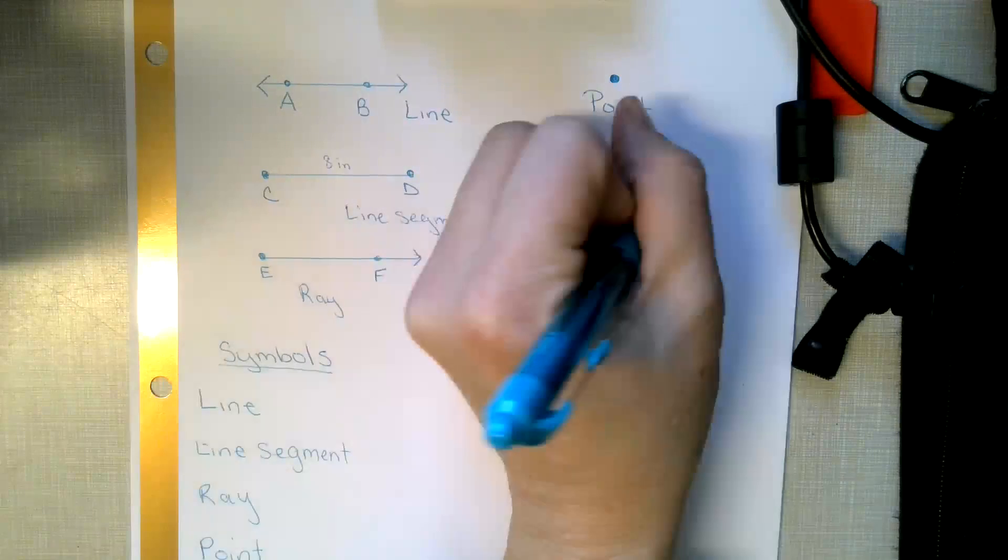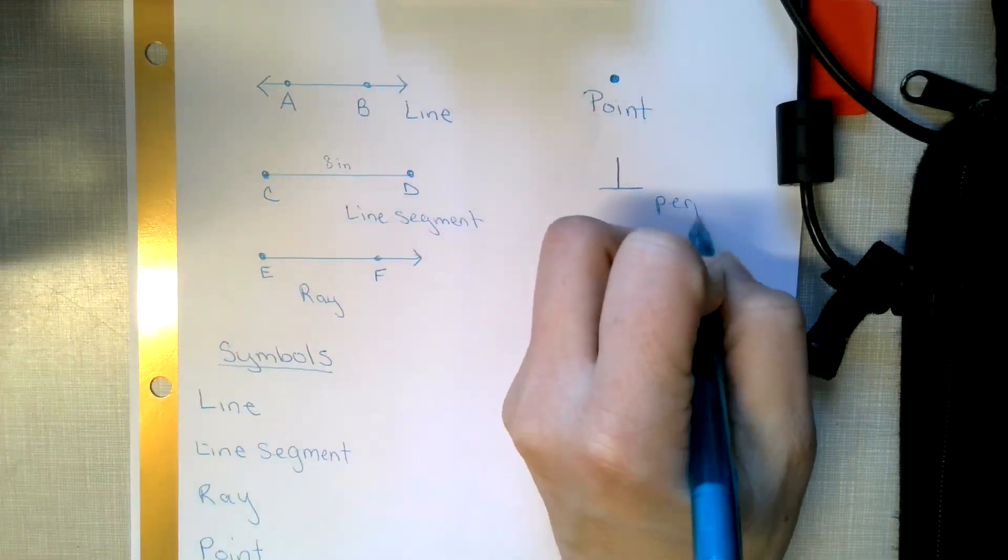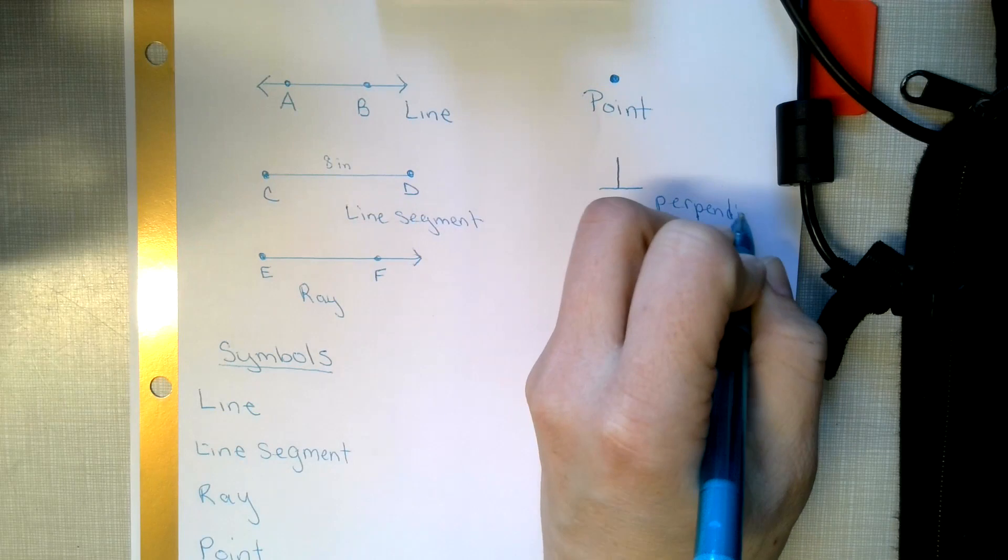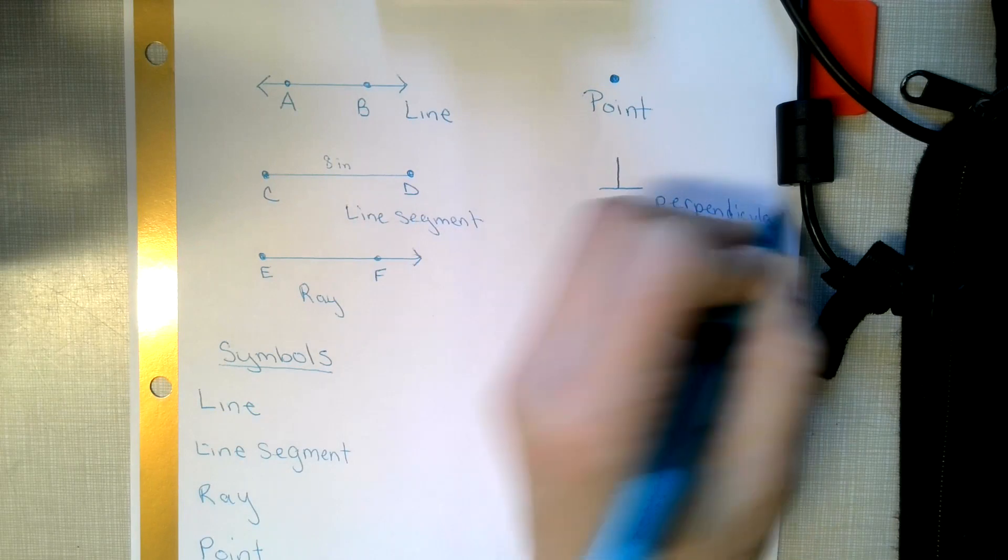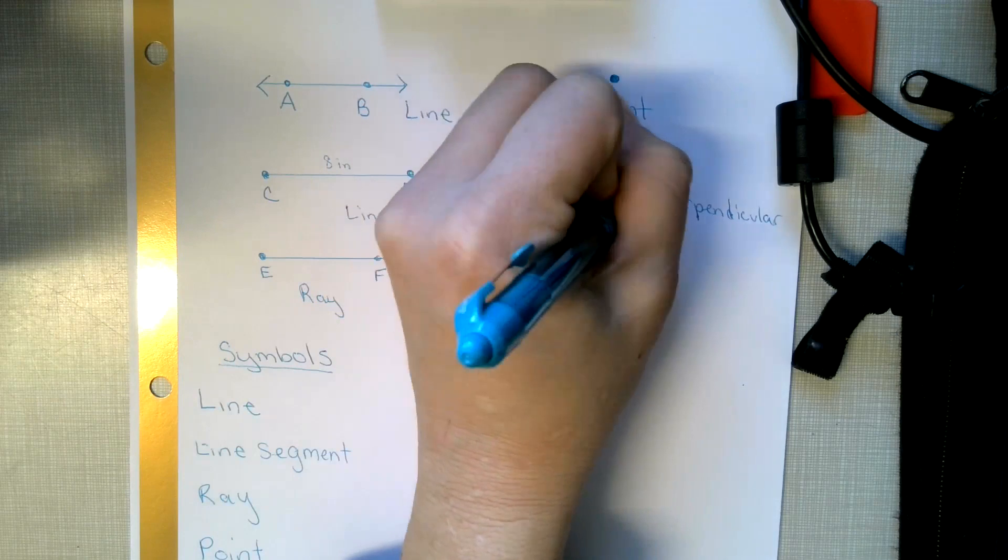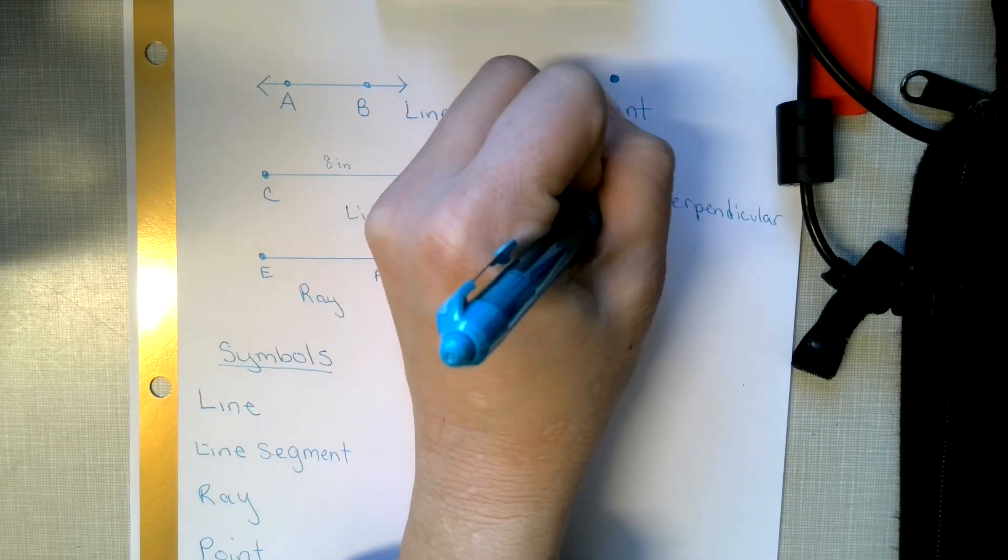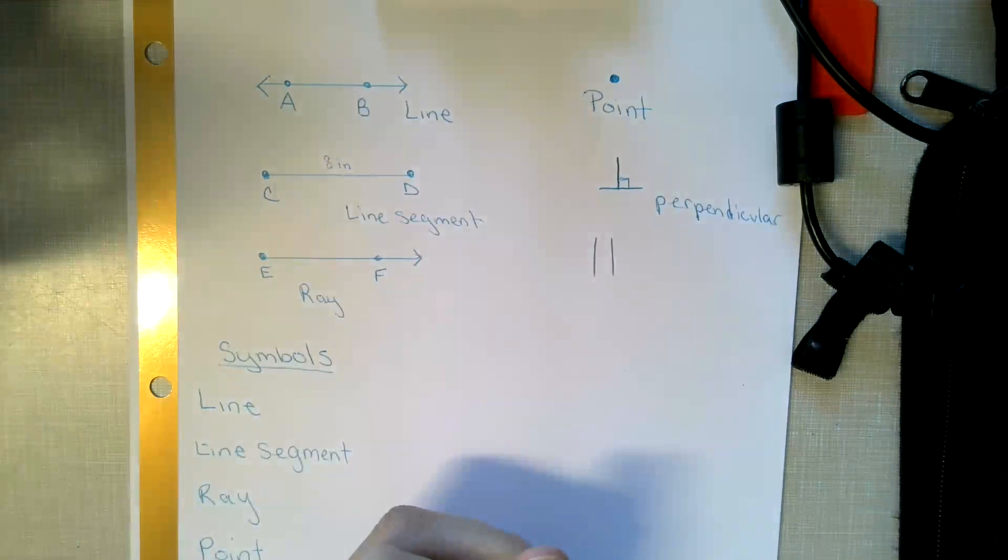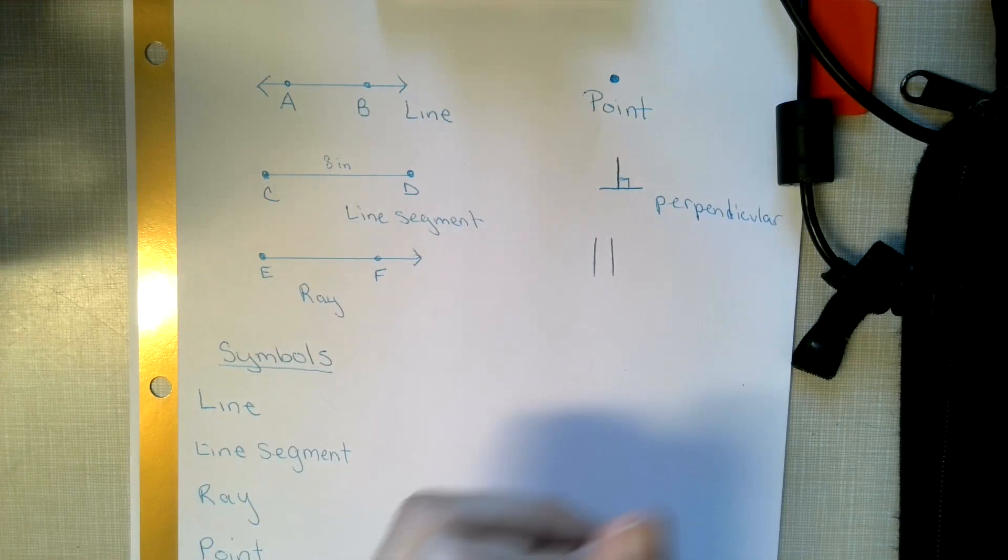Now this is perpendicular. Perpendicular means it takes the height of something and the base of something and it forms a 90 degree angle. So that's perpendicular.